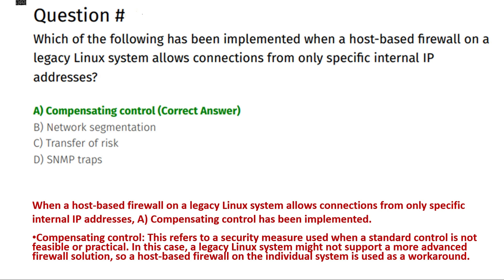Which of the following has been implemented when a host-based firewall on a legacy Linux system allows connections from only specific internal IP addresses? Option A: compensating control. Option B: network segmentation. Option C: transfer of risk. Option D: SNMP trap.